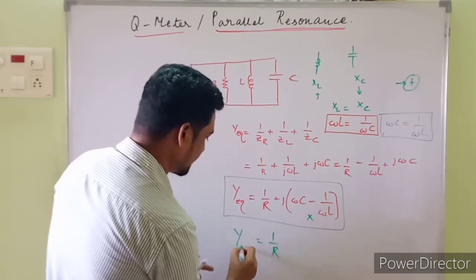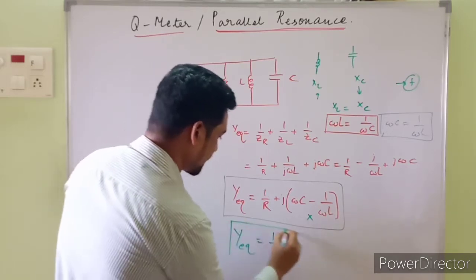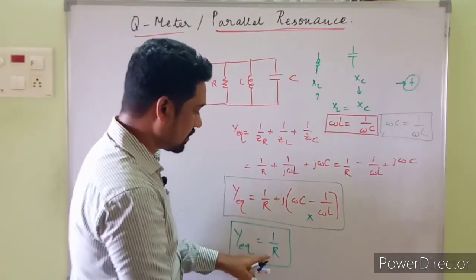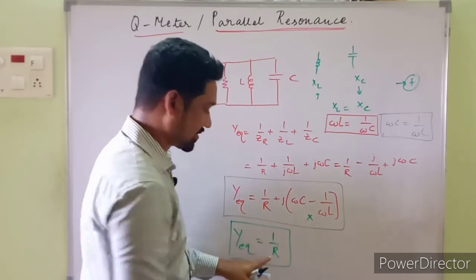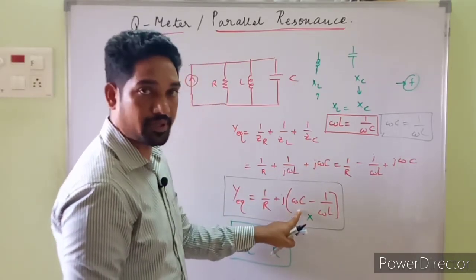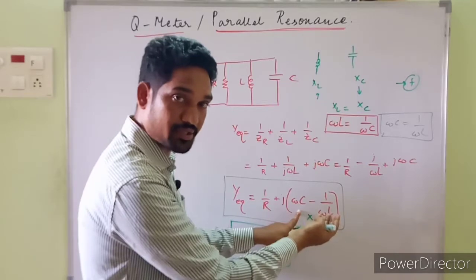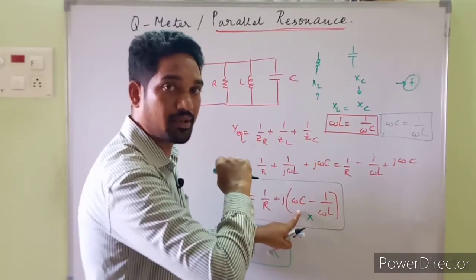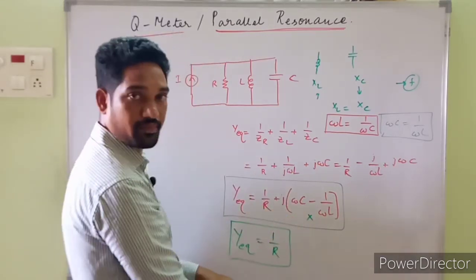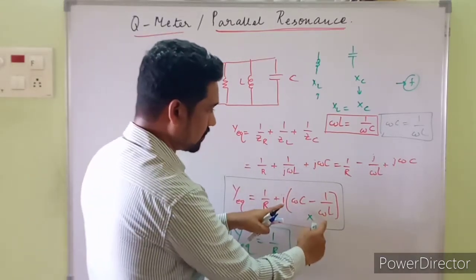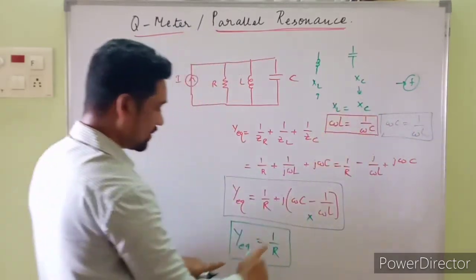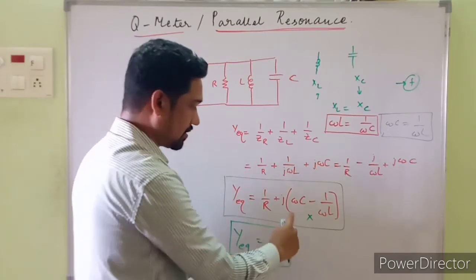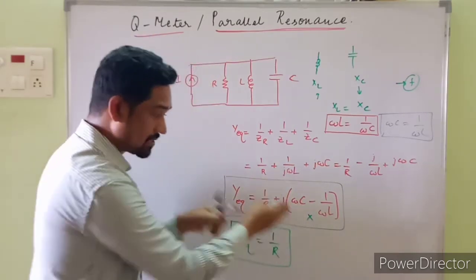Guys, a very important statement: at resonance, the circuit would behave completely resistively. We don't have any reactance. At resonance, I can neglect the imaginary term — this is the reason. At resonance, ωL = 1/(ωC) from this expression, and the circuit will be completely resistive. This is my proof. Please make a note.